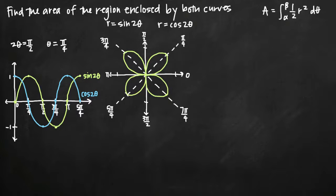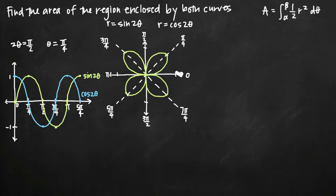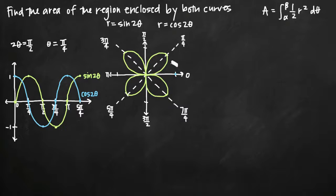Now we can do the same thing with the cosine curve, transferring it from Cartesian to polar coordinates. At angle 0, we're out a distance of 1 from the origin. Then as we come to angle π/4, we're at distance 0 — back at the origin. So as we come from 0 toward π/4, we curl back toward the origin.